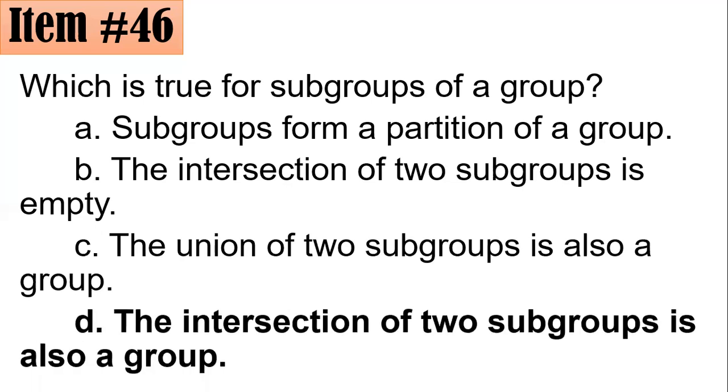And for letter D, the intersection of two subgroups is also a group. This is in fact correct. So remember, intersection of subgroups is a group, but their union is not necessarily a group.